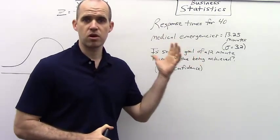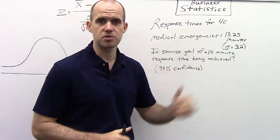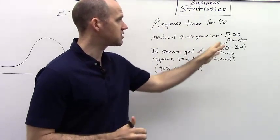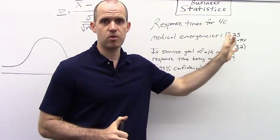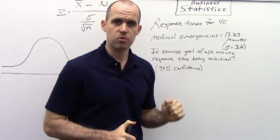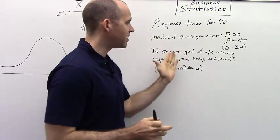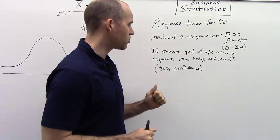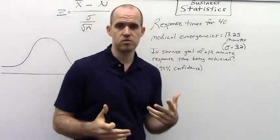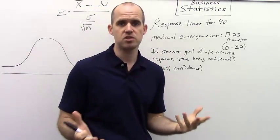Imagine that I work for a hospital, and I collect data for 40 medical emergency response times. And I find within this data that the mean response time is 13.25 minutes, with a population standard deviation of 3.2 minutes. Now, at this hospital, we have a service goal of a 12-minute response time. So the question becomes, are we achieving that goal?